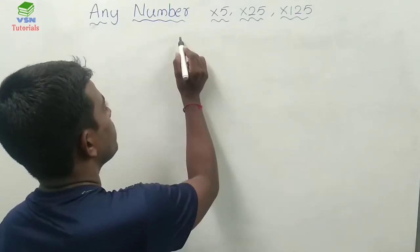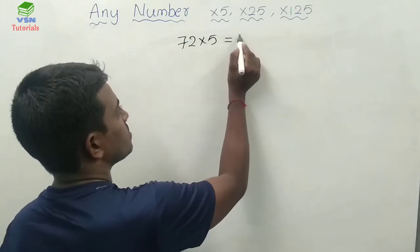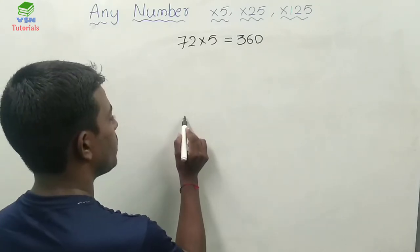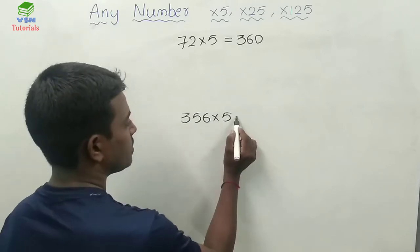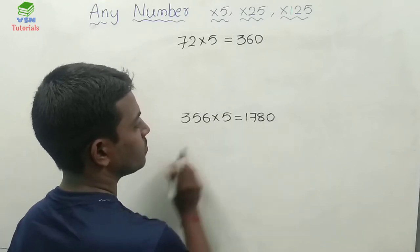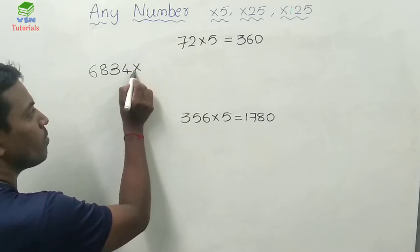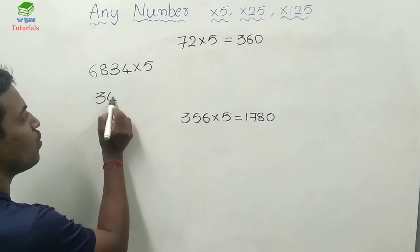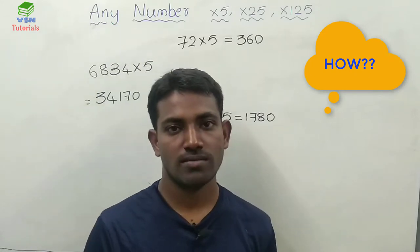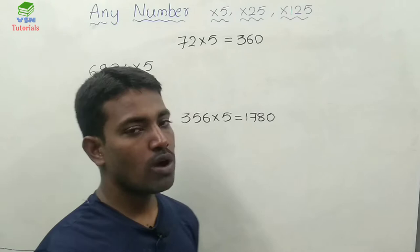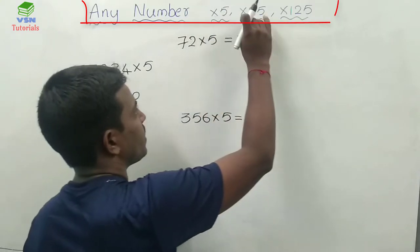Friends, I want to multiply 72 by 5. The answer is 360. And I want to multiply 356 by 5. The answer is 1780. And I want to multiply 6834 by 5. The answer is 34170. But how am I getting these answers? That's why I have come up with a trick for multiplying any number by 5, 25, and 125.